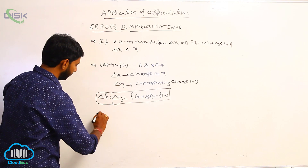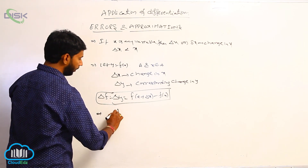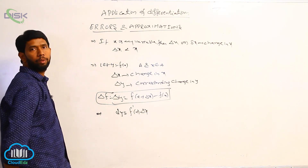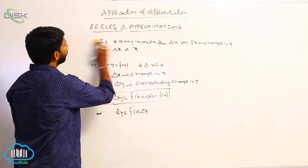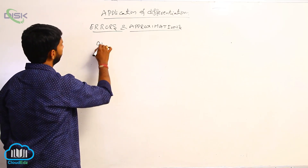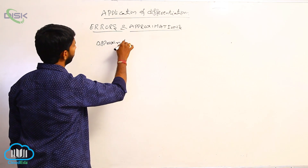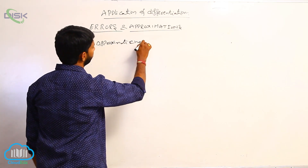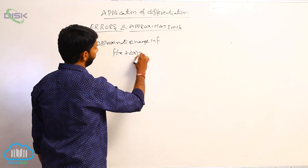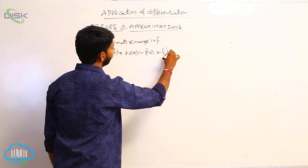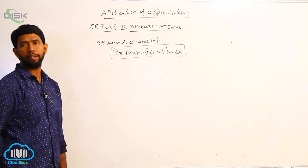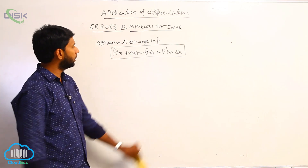Next, dy = f'(x) · delta x. And the approximate change in f is represented as: f(x + delta x) = f(x) + f'(x) · delta x.